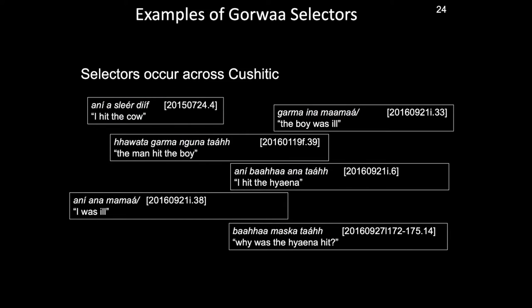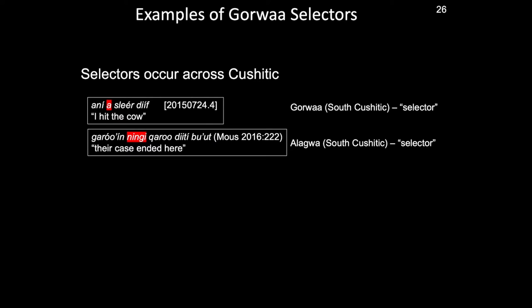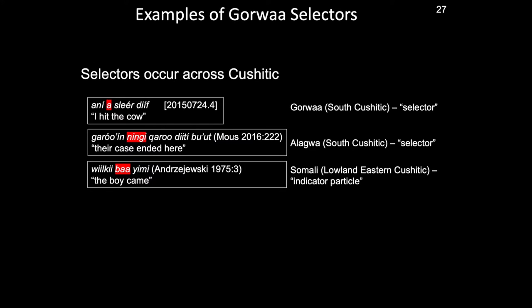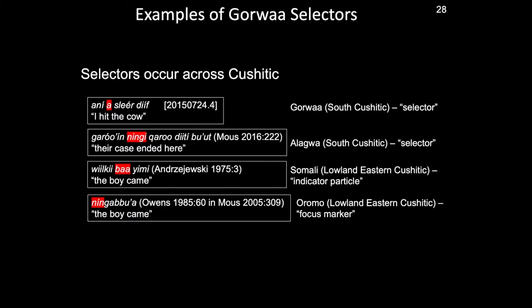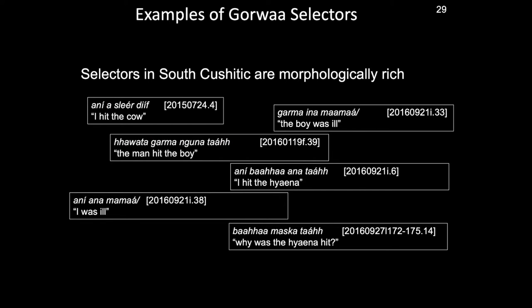Selectors aren't unique to Gorwa or even to South Cushitic. In Somali, similar constructions are called indicator particles. In Oromo, they are called focus markers. Selectors do, however, reach their most morphologically complex forms in Gorwa and the other South Cushitic languages, where they can mark clause type, voice, ventivity, argument structure, aspect, as well as mood.